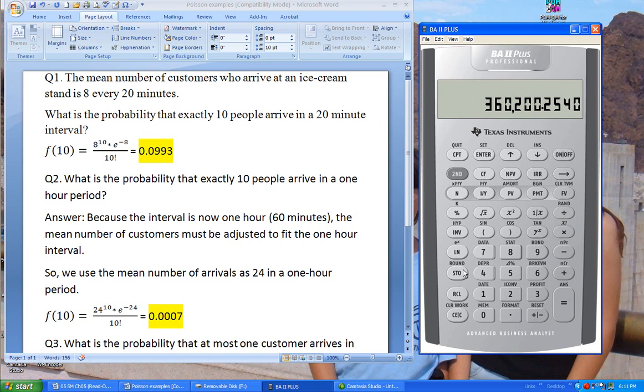Divided by 10 factorial. So I'm going to put 10 and the factorial button is a second function key and you use the multiplication button. So you do second function, multiply and that number is 10 factorial. So if I hit equal, the answer is 0.0993, which is right here and you can also verify it using the Poisson table that's in your book.